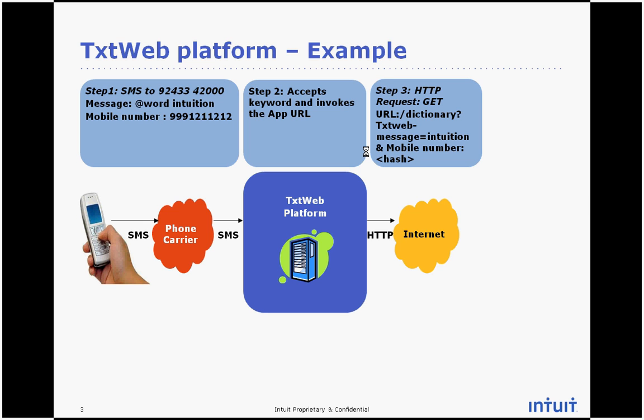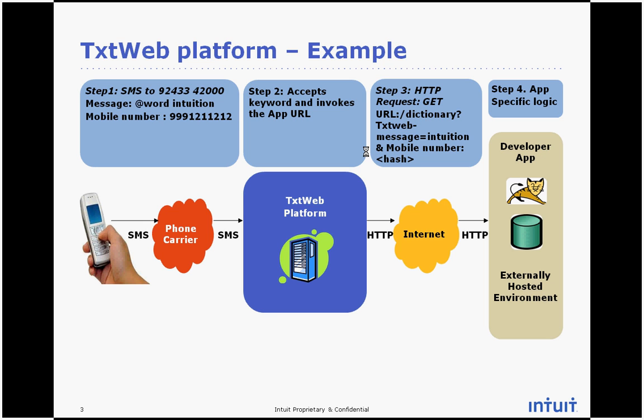The TextWeb platform will do a lookup, figure out what the URL is, and simply do an HTTP request invocation of the application, sending that over to the developer's app. That's step number three. As you can note in step number three, we've done a URL lookup in the TextWeb platform, sent the request by invoking the URL, and sent the URL parameters: message and mobile number.